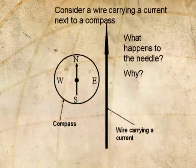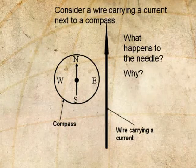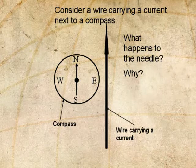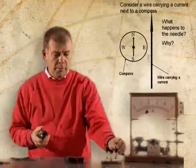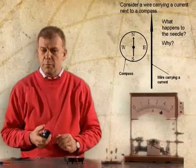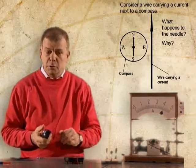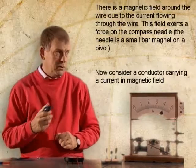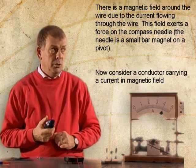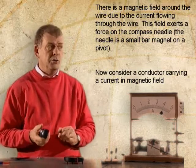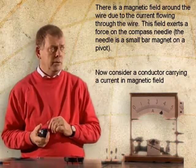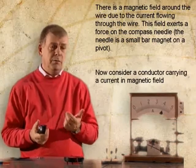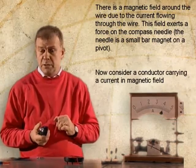But first, let's look at this experiment. I've got a large compass on the table and a wire across the top of the compass. If I connect the circuit and pass a current through that wire, the compass moves, showing that there's a force on that needle. There's a magnetic field around the wire due to the current flowing through it, and this field exerts a force on the compass needle. The needle is a small bar magnet on a pivot, and so it makes it move.